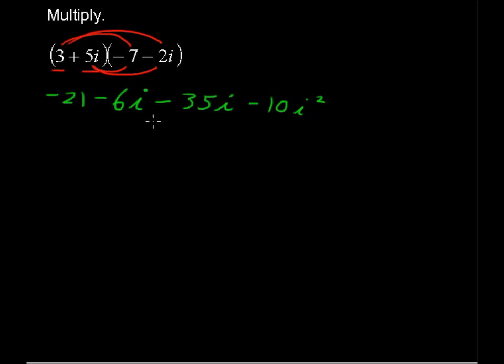We have negative 6i and negative 35i, and that'll give us negative 21 minus 41i minus 10i squared.